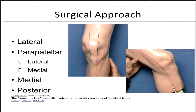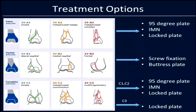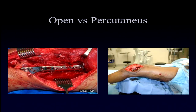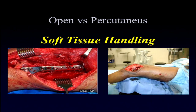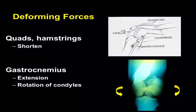When approaching these fractures, a lateral approach is most common for plating. The peripatellar approach and the medial or posterior so-called swashbuckler approach have also been described. Whether the approach is open or percutaneous, it's all about respecting the soft tissue. You can do an open approach as long as you don't strip the periosteum excessively, or you can do a percutaneous approach and cause just as much damage with excessive tugging through small incisions. Respect the tissues and overcome deforming forces.